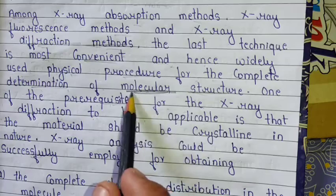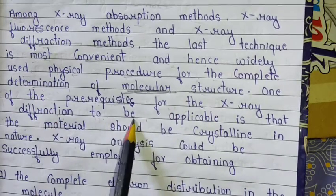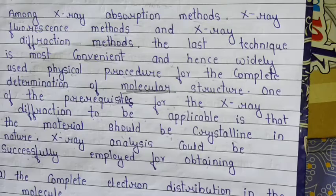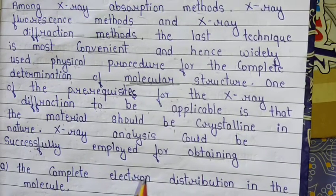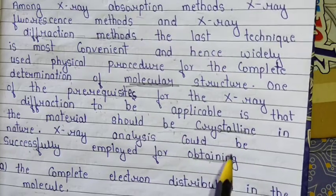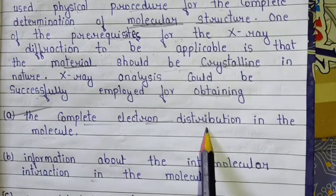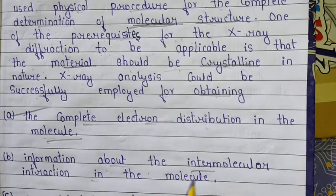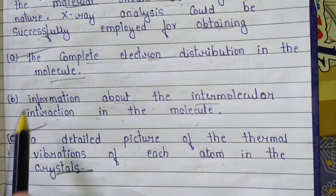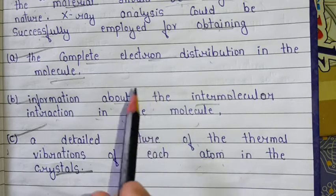One of the prerequisites for X-ray diffraction to be applicable is that the material should be crystalline in nature. X-ray analysis can be successfully employed for obtaining: first, a complete electron distribution in the molecule; second, information about the intermolecular interactions in the molecule; and third, a detailed picture of the thermal vibrations of each atom in the crystal. These three important things can be obtained after using the diffraction method.